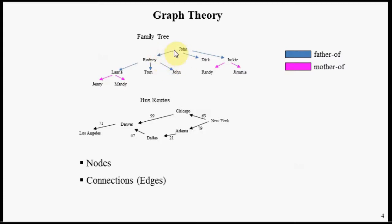Sometimes in graphs, you have a semantic relationship associated with these arrows. In this family tree graph, we have a father of relationship and we have a mother of relationship.